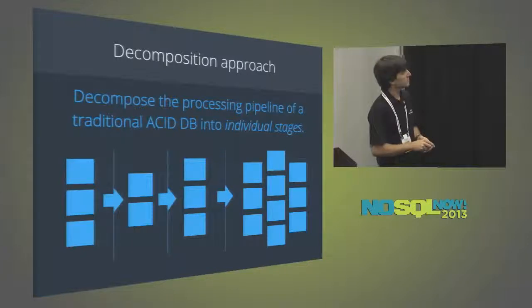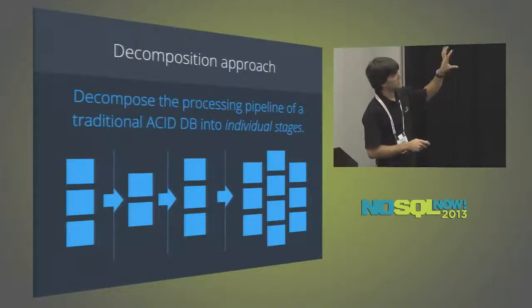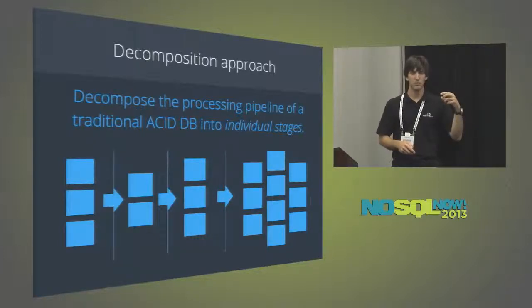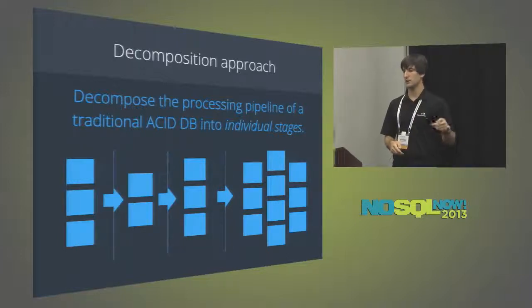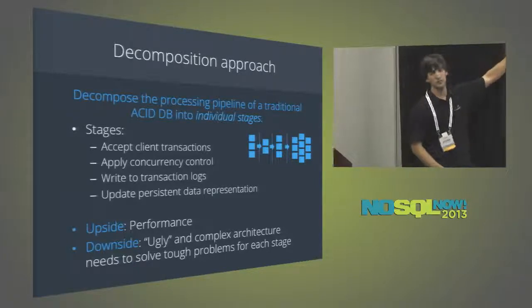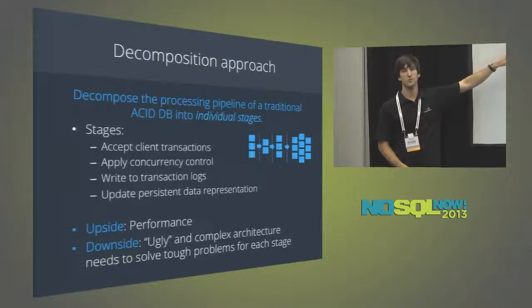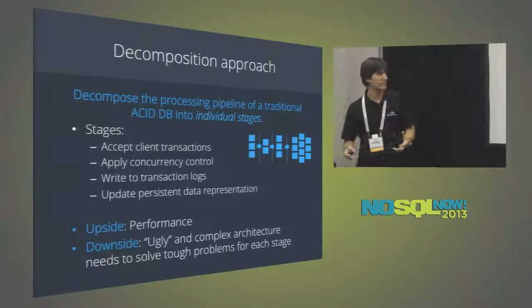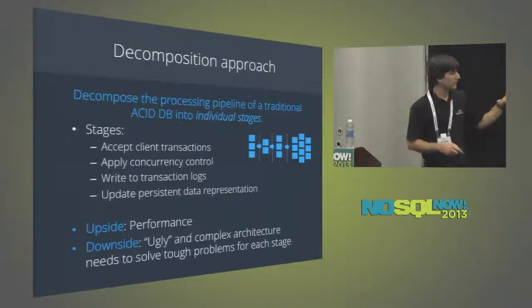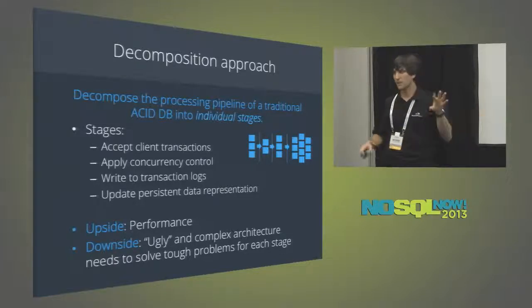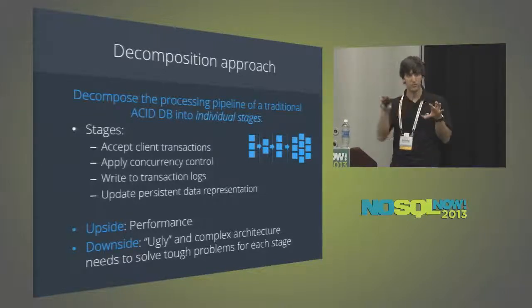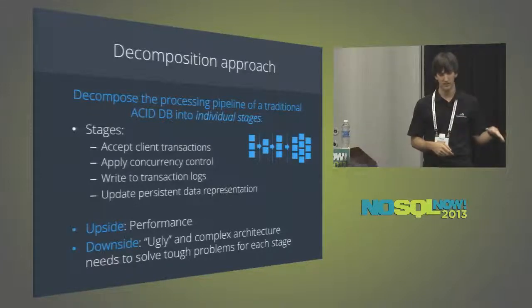The third approach is what FoundationDB takes: the decomposition approach. It takes the processing pipeline of a traditional ACID database and attacks the individual stages to make each stage fault-tolerant and distributed. The stages are: accepting client transactions; applying concurrency control to enforce isolation; writing to transaction logs; and updating a persistent data representation. The upside is performance potential — attacking each problem separately with appropriate techniques gives you the potential to build a higher-performance system. The downside is that it's a complex architecture and you need to solve tough problems for each separate stage.